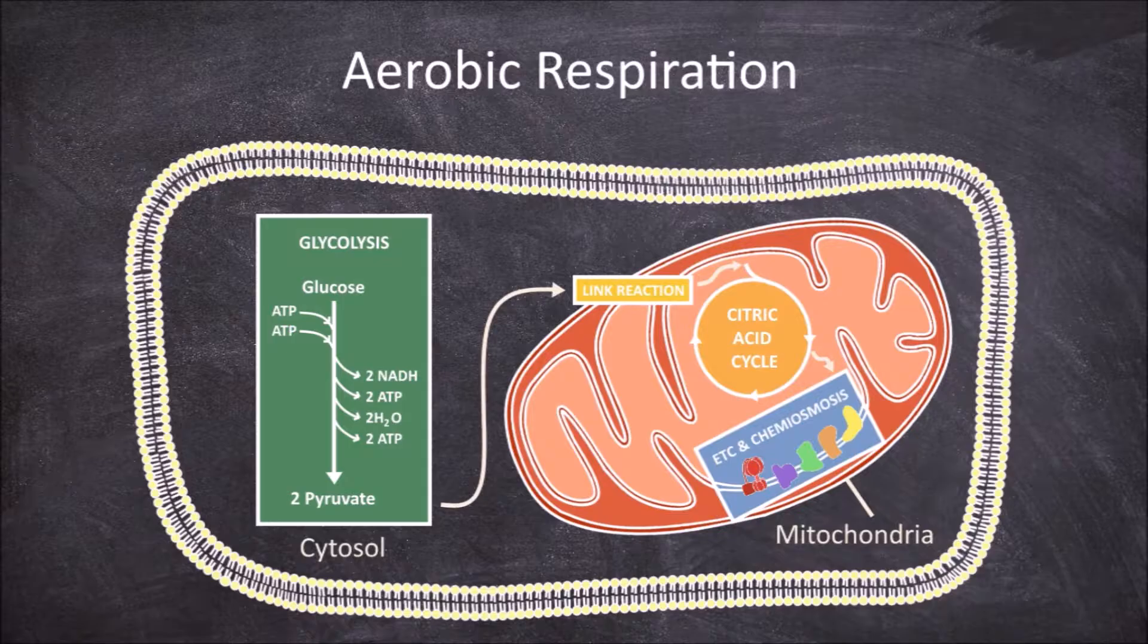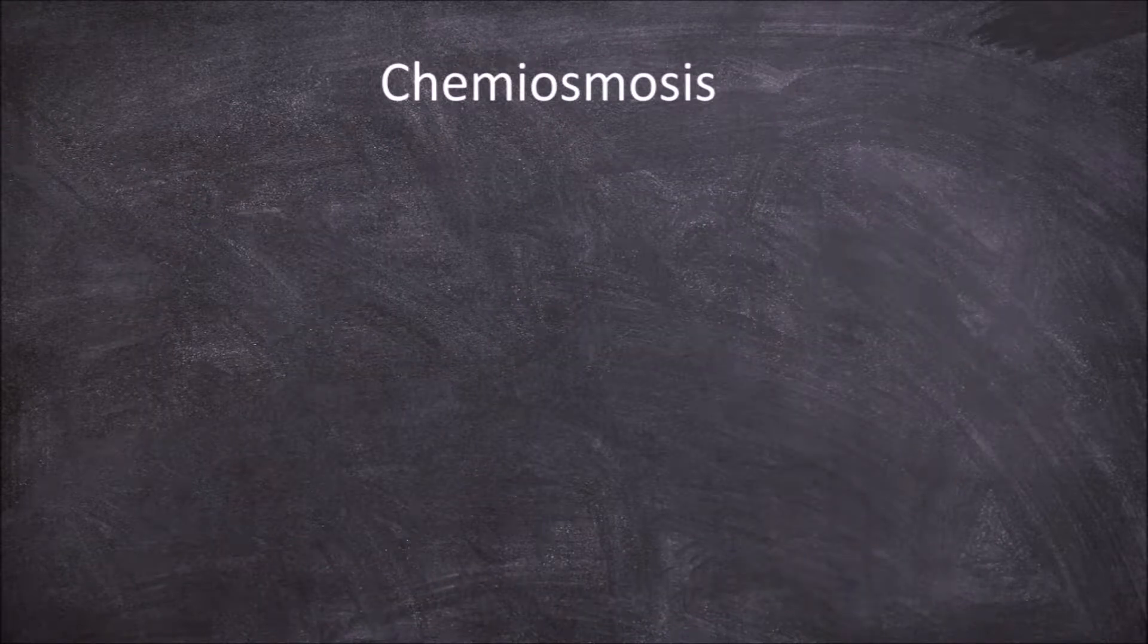Then it goes through the electron transport chain and chemiosmosis in the inner mitochondrial membrane producing energy in the form of ATP. In this video we're going to look at the fifth and final process involved in aerobic respiration, chemiosmosis.